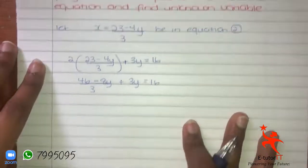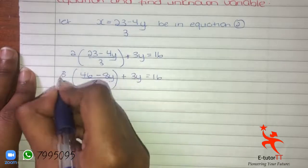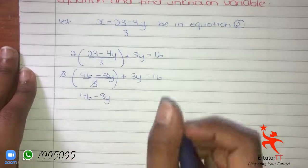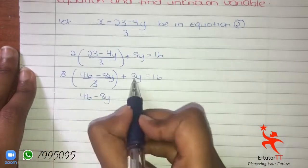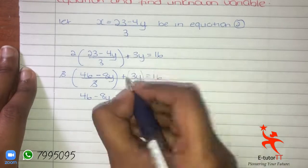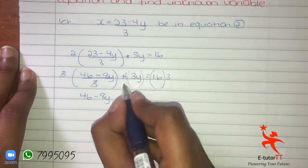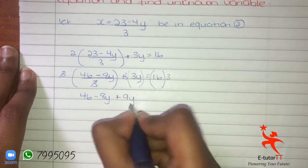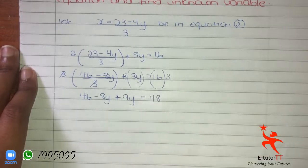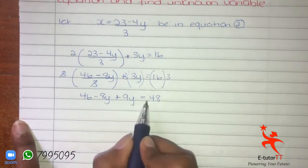Let's get rid of the 3 in the denominator. If we multiply through by 3, the 3 cancels giving 46 − 8Y, but we must multiply everything else by 3 too. So 3 × 3Y = 9Y, and 16 × 3 = 48. We now have: 46 − 8Y + 9Y = 48.